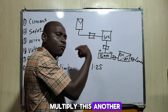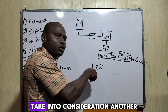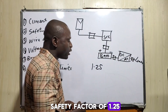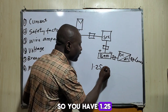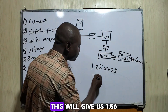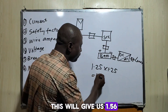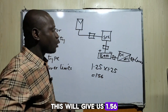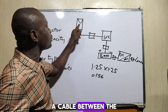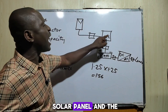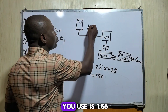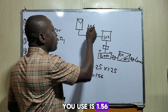You then need to multiply by another safety factor of 1.25. So you have 1.25 multiplied by another 1.25, which gives us 1.56. When sizing a breaker, fuse, or cable between the solar panel and the solar charge controller, the safety factor you use is 1.56.